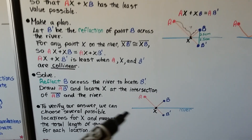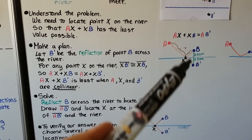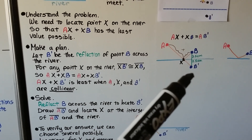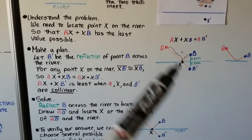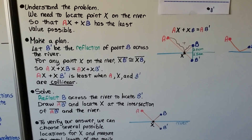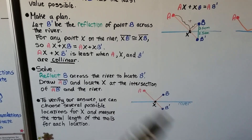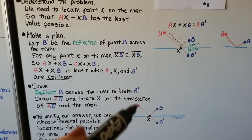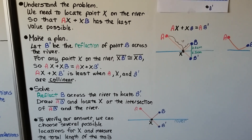To solve it, reflect B across the river to locate B prime — it's 2.5 centimeters from the river, so we place B prime 2.5 centimeters on the other side, perpendicular to the line. Then draw a segment from A to B prime and locate X at the intersection of that segment with the river. To verify, choose several possible locations for X and measure the total trail length for each to confirm this gives the shortest distance.